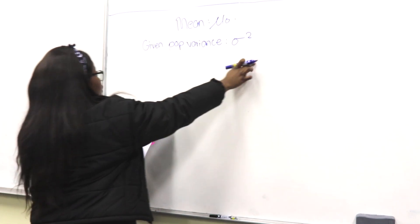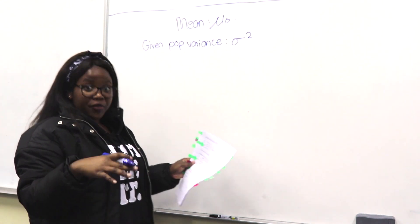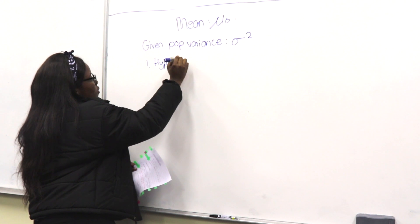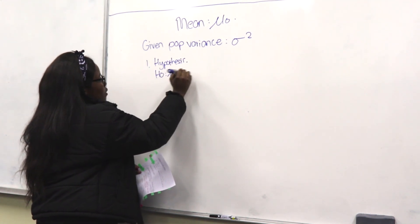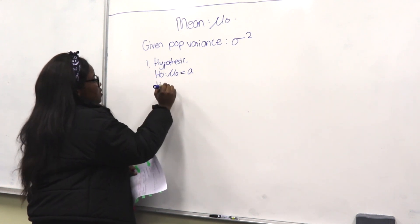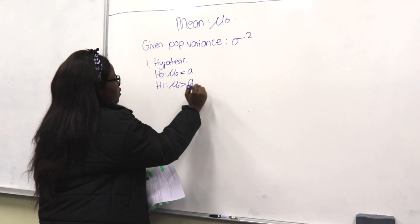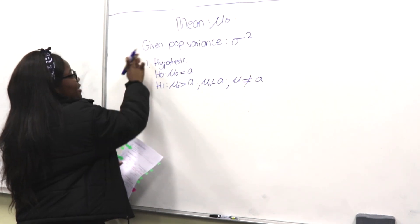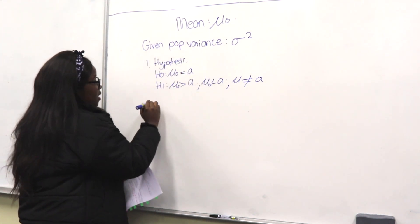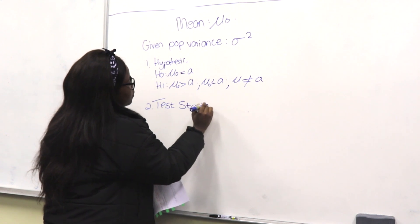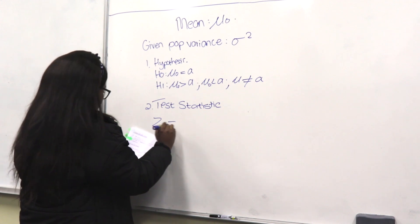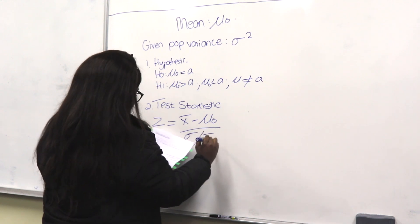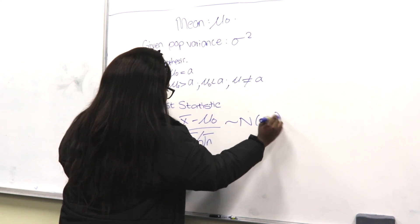Now for given population variance. The null hypothesis H-naught has mu equal to a certain number. The alternative hypothesis H1 can be: mu greater than a certain number, mu less than a certain number, or the two-tailed case where mu is not equal to a certain number. The test statistic when given population variance is z equals x-bar minus mu, over sigma divided by root n. It follows a normal distribution.